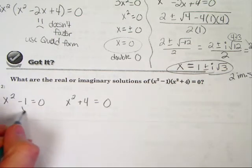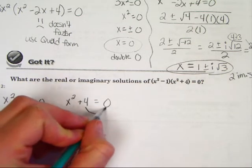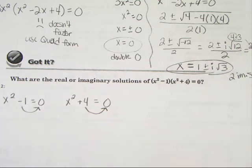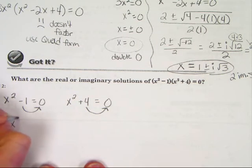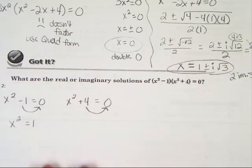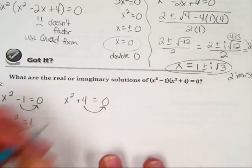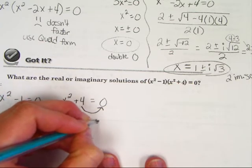Now, what I'm going to do is add this 1 over there. And on that one, I'm going to take away the 4. So when I add 1, I get x² equals a positive 1. And on this problem, when I take away the 4, I get x² equals a negative 4.